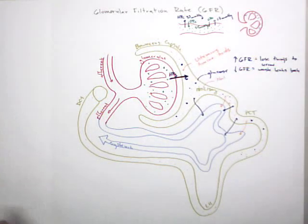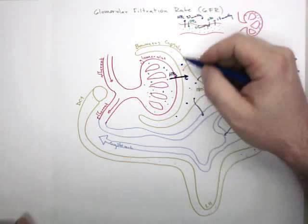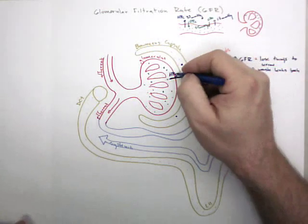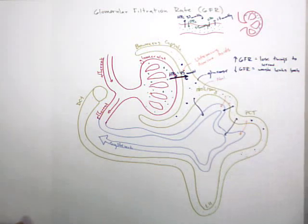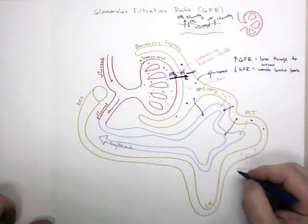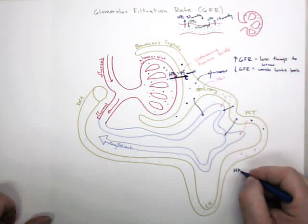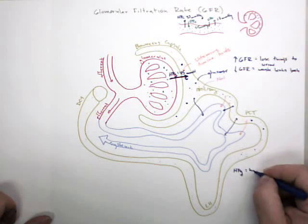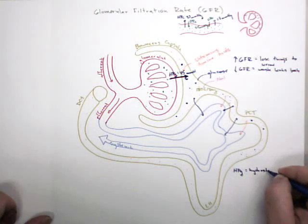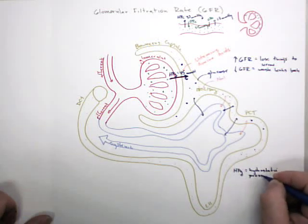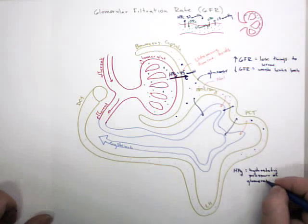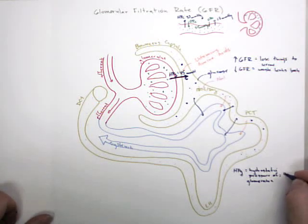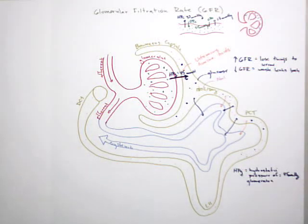It's called HPG because it's the hydrostatic pressure of the glomerulus now instead of the capillary. It's about 45 millimeters of mercury. I'm going to write this down over here. HPG equals hydrostatic pressure of glomerulus, equal to 45 millimeters of mercury.